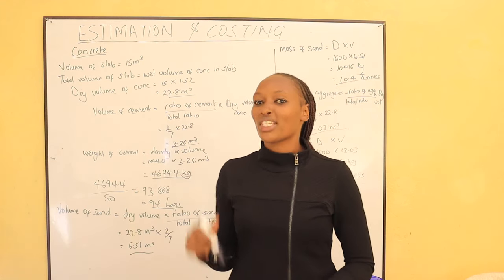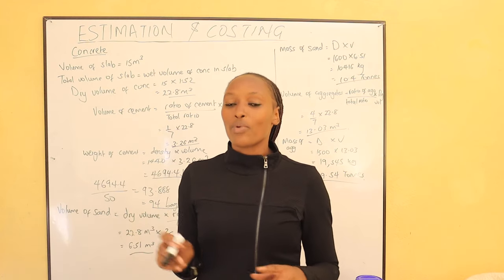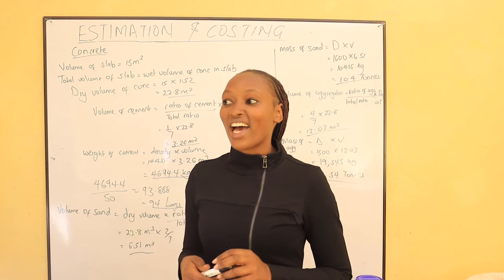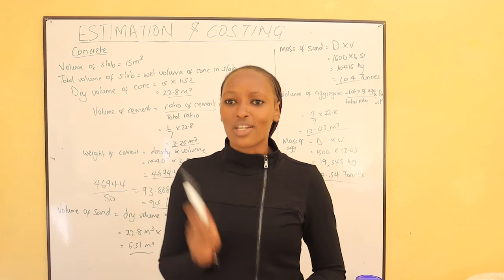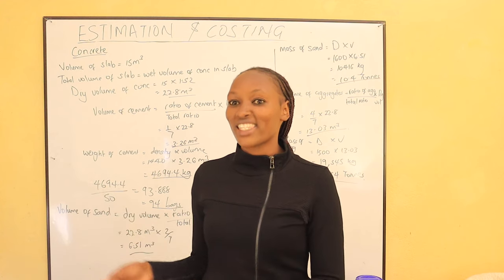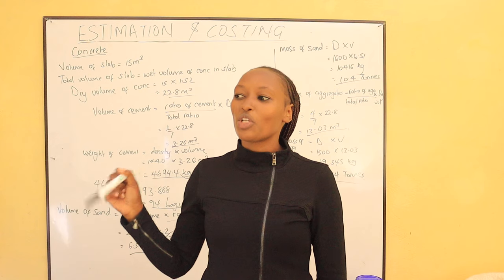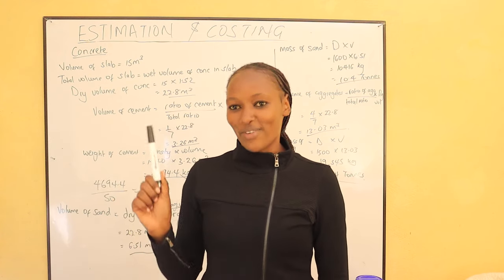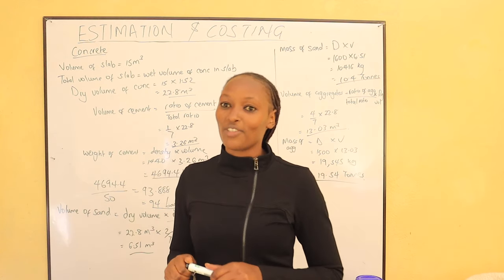In our next video, we shall come up with a plan — actually this is a plan I have for toilets — and we shall be able to calculate all the materials required for a building that has around 12 washrooms. We shall calculate all the materials from the foundation to the roof, even the number of iron sheets. So keep tuned and check out our next videos.